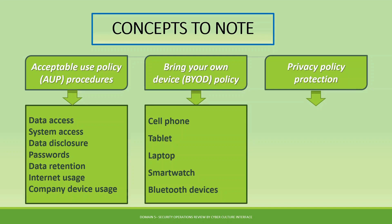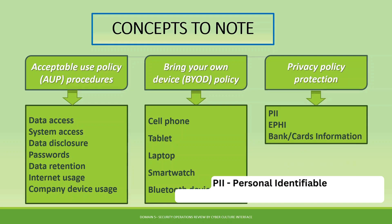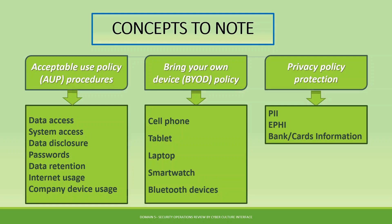Privacy policy protection covers things like personal information and personally identifiable information — such as your name, phone numbers, and other personal details — which must be protected. These policies guide how such data is handled. Additionally, EPHI (Electronic Protected Health Information) and bank card information are examples of private data that organizational policies govern in terms of how they are used and made available within the organization.